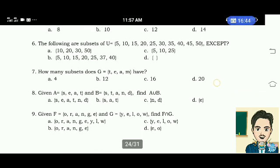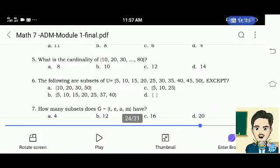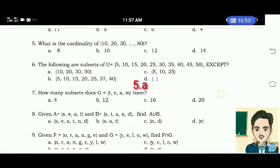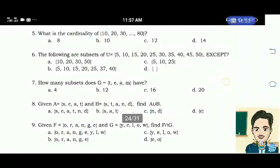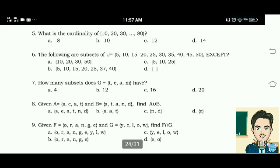Number 6. The following are subsets of U having elements 5, 10, 15, 20, 25, 30, 35, 40, 45, 50. Except.